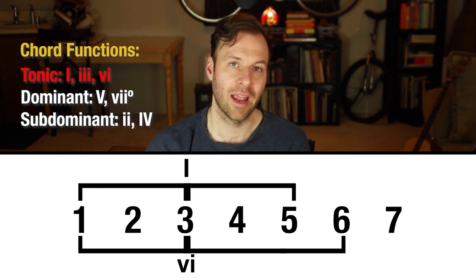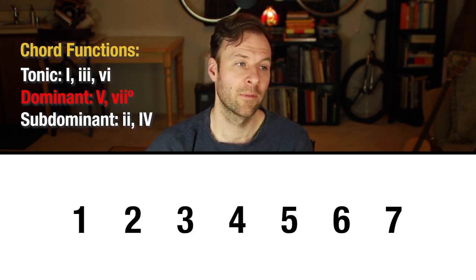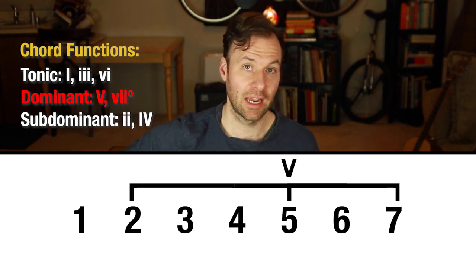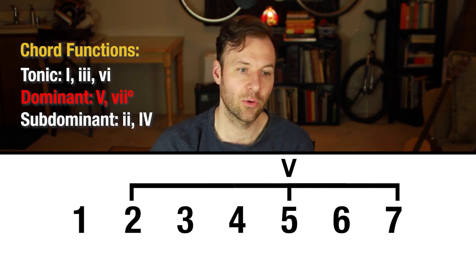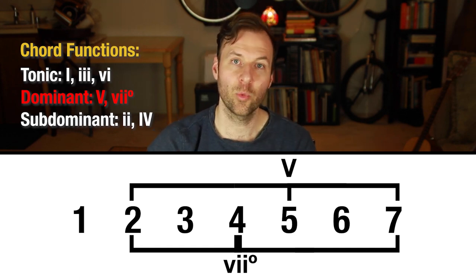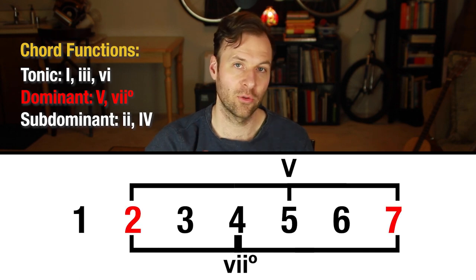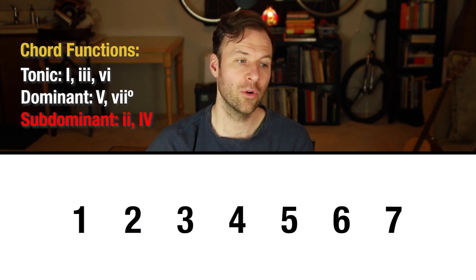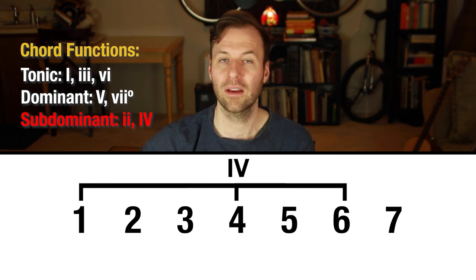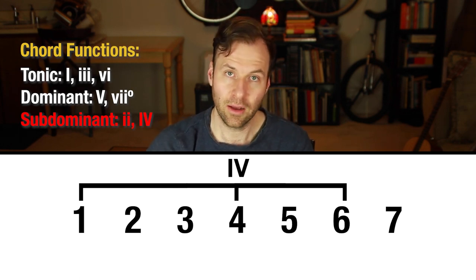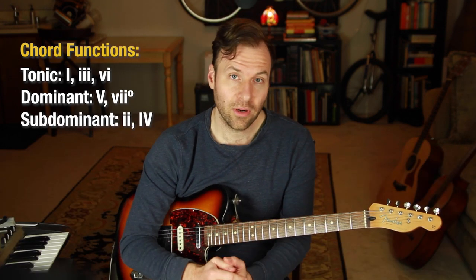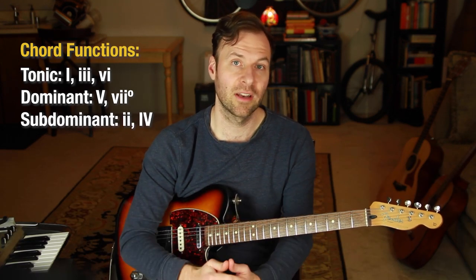This is why those three chords can function as tonic. For dominant functioning chords, the five chord — the dominant chord itself — has five, seven, and two from the scale. The seven chord, the other dominant functioning chord, has seven, two, and four from the scale, and those two chords share two of the same notes. For subdominant functioning chords, the four chord has four, six, and one from the scale, and the two chord has two, four, and six — again sharing two of the same notes. Now it's starting to make sense how these chords might have the same function as each other.